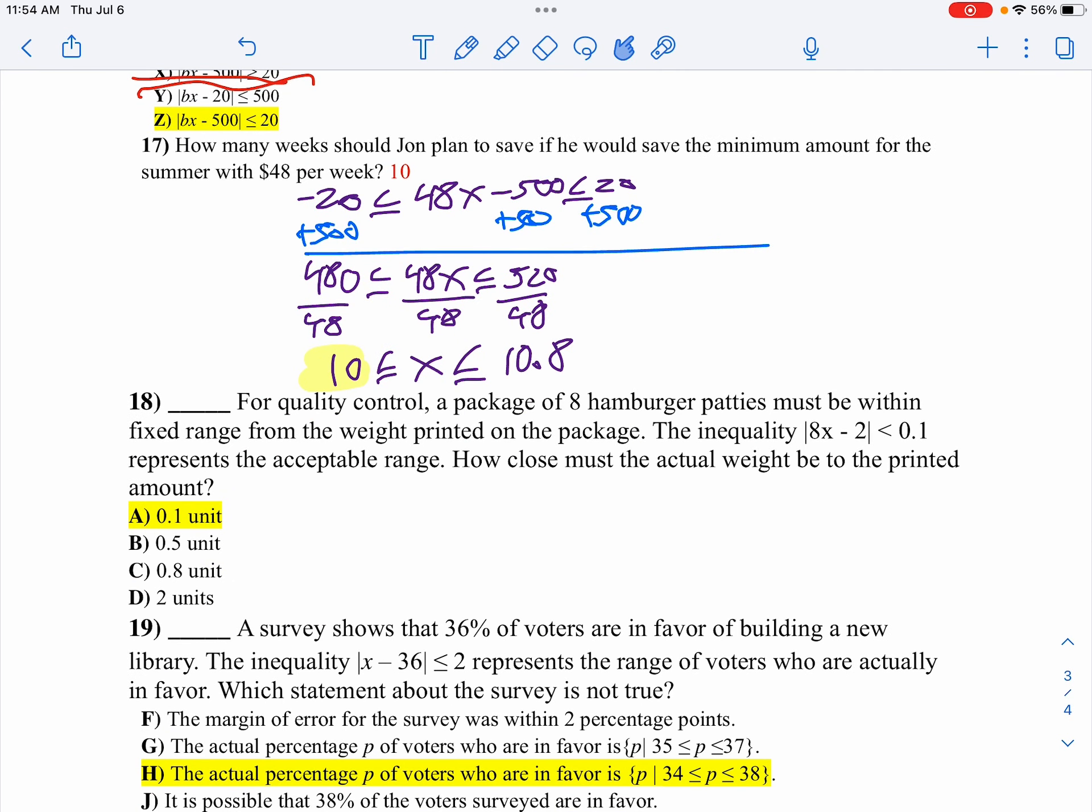And in question 18, it says, for quality control, a package of eight hamburger patties must be within the fixed range of weight from the package. So we've got this inequality. How close must be the actual weight to be the printed amount? Well, it's got to be within 0.1. So our correct answer there is A.